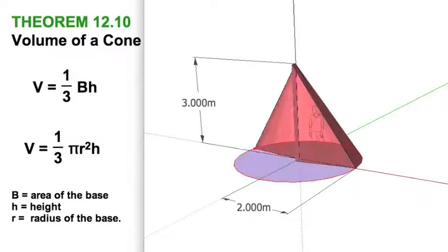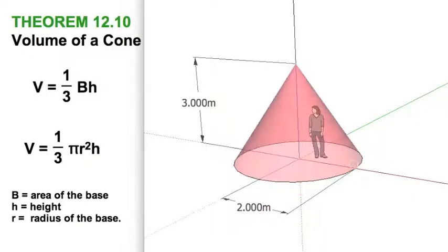And right away, I could just directly substitute into the equation on the left. Of course, the area of the base is pi r squared. So pi r squared times height. Let's look at it another way.